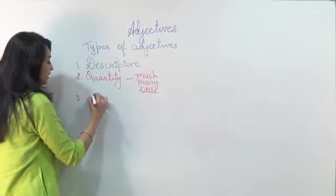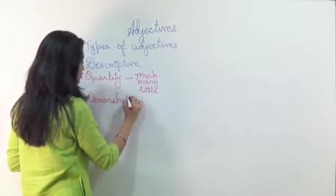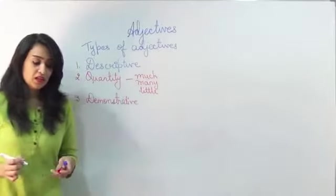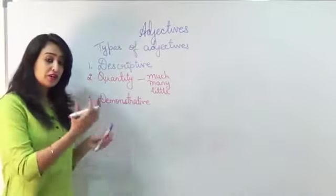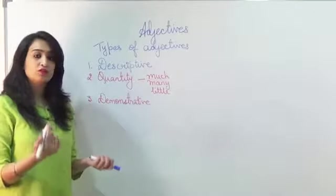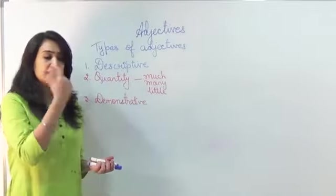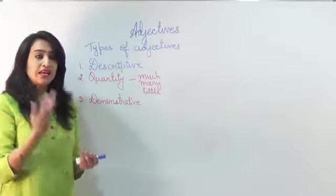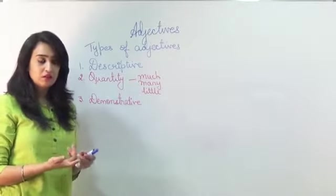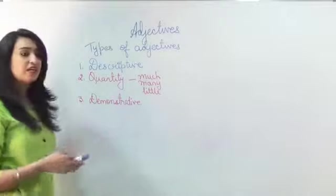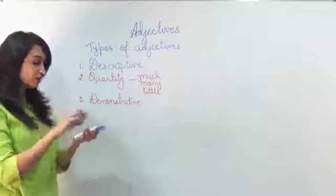Then we can describe by demonstrating where it is. If you remember, we spoke about this, that, these, those. We were talking about how far or close or how many were in number. Now here we are actually talking about the thing.